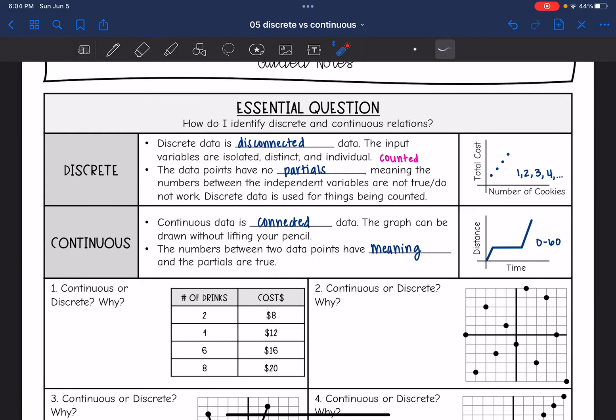So something important to point out, this does not mean goes on forever. Discrete data could go on forever. Continuous data could not go on forever. That's not what these words mean. They mean disconnected or connected. We're not talking about going on forever.